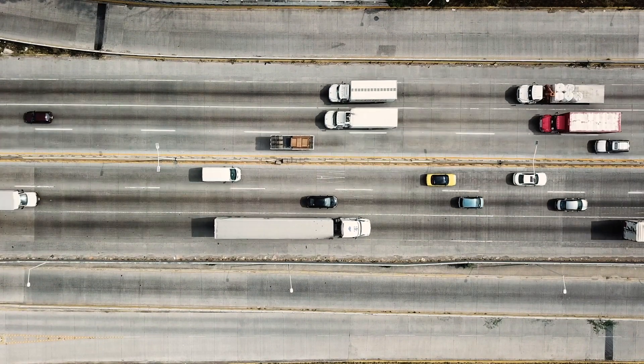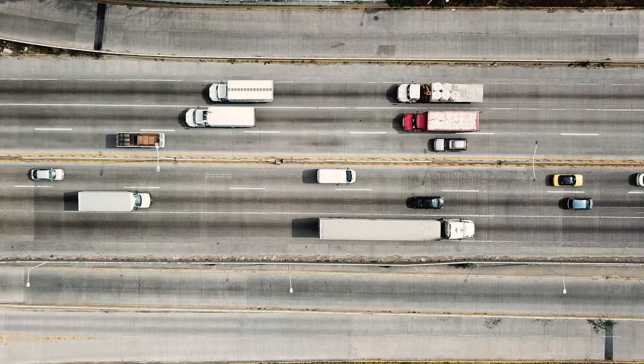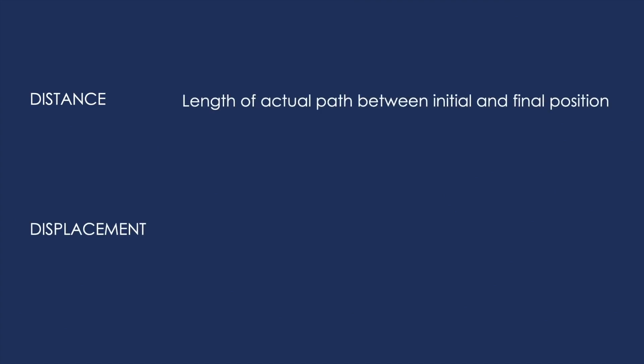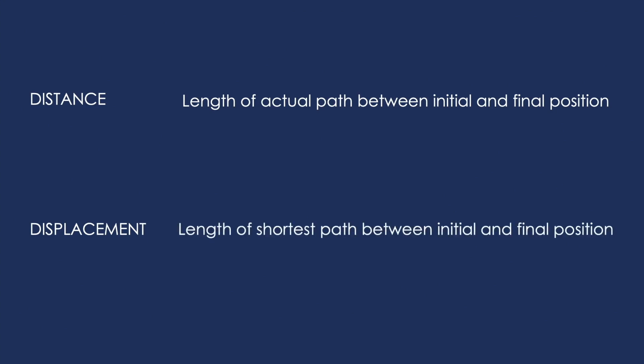To describe the change of position, we use two terms – distance and displacement. Distance is the length of the actual path between the initial and final position. Whereas, displacement is the length of the shortest path between the initial and final position. Now let us understand these two terms and the difference between them using some examples.